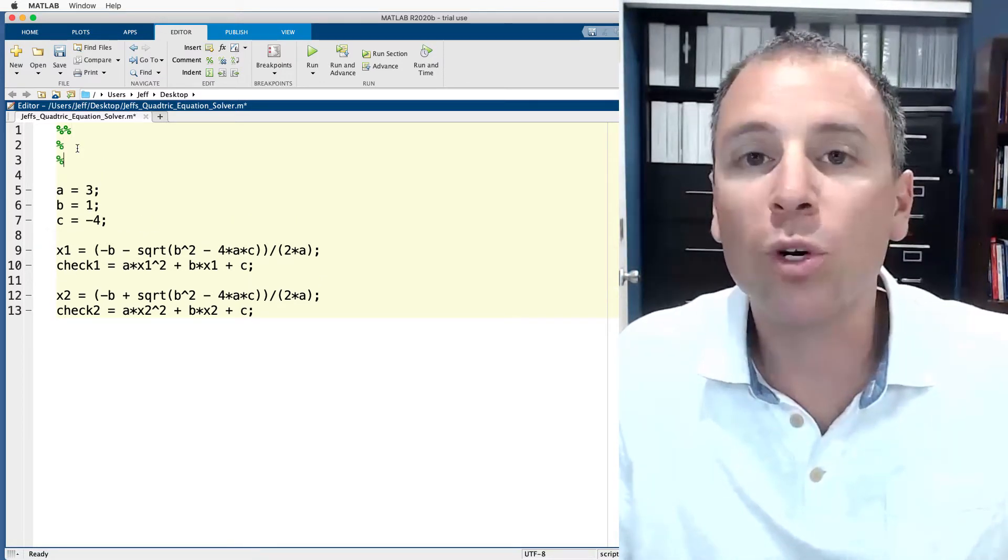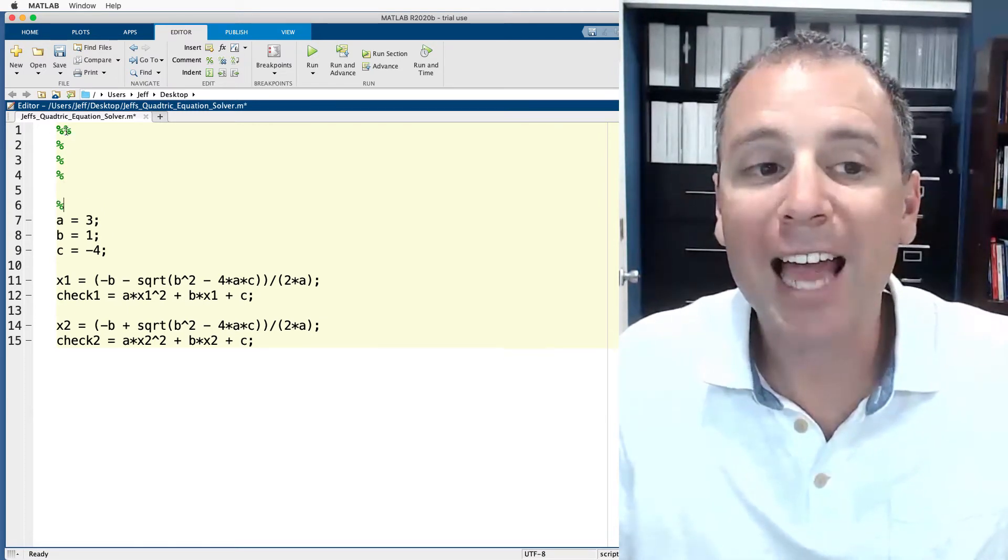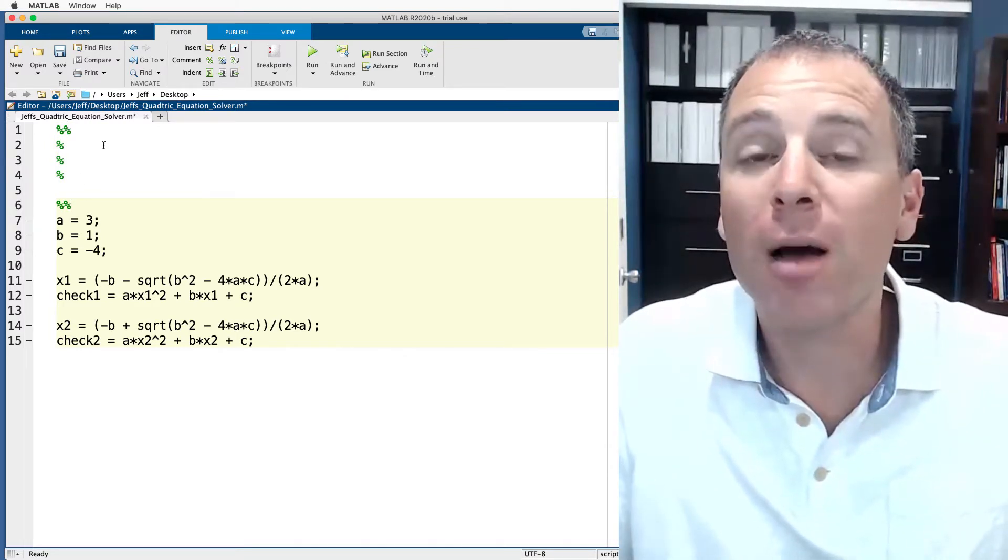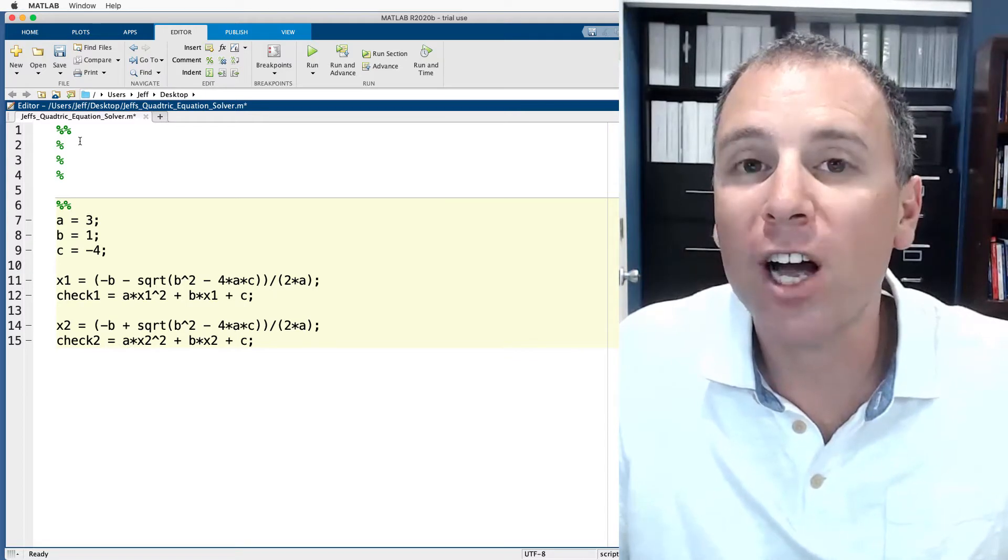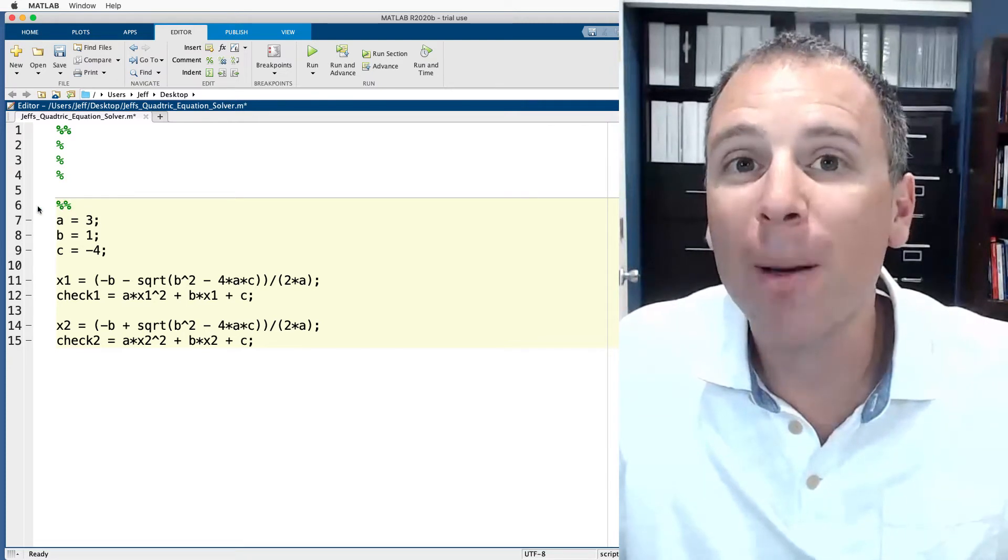Then what we'll do is we'll create some percent signs to represent a commenting block. We'll go down again and create another double percent sign that is now a different section of our code. Up here this first section we're gonna talk about as documentation. The second section we're gonna talk about as the code body.